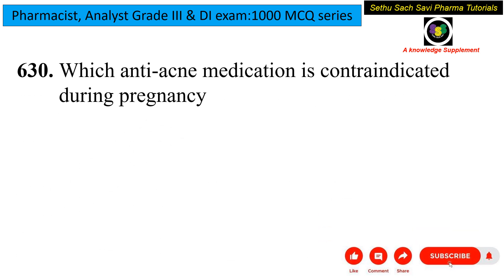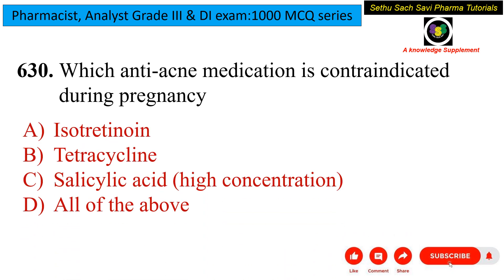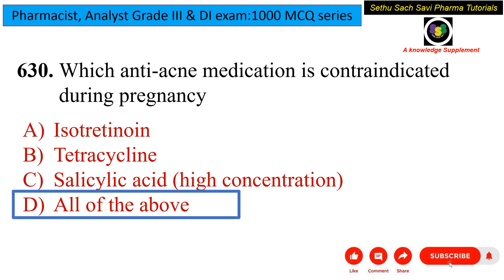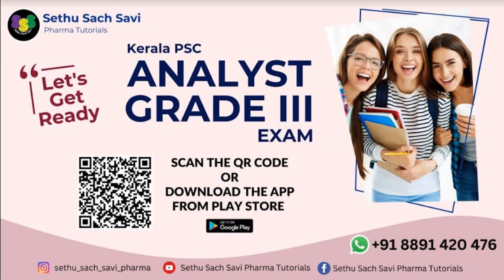Final question: which anti-acne medications are contraindicated during pregnancy? Options are isotretinoin, tetracycline, salicylic acid at higher concentrations, or all of the above. The answer is all of the above. Isotretinoin causes fetal defects; tetracycline causes tooth discoloration in the fetus; salicylic acid at high concentrations can cause birth defects. This video is part of the Kerala KSE Analyst Grade 3 exam course by A-Tutorials.